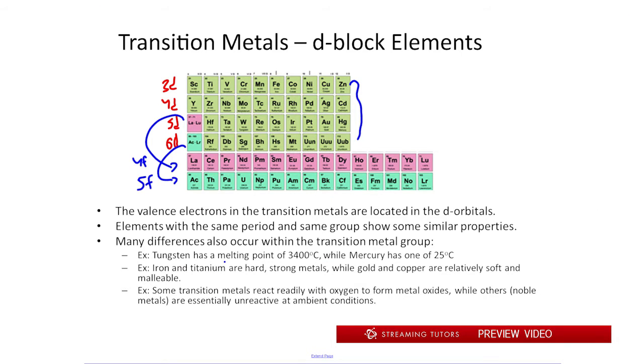One example of this is the melting points of some of them. If you look down here, tungsten has a melting point of 3400 degrees Celsius, whereas something like mercury only has one of 25 degrees Celsius. We know that mercury is a liquid at room temperature.